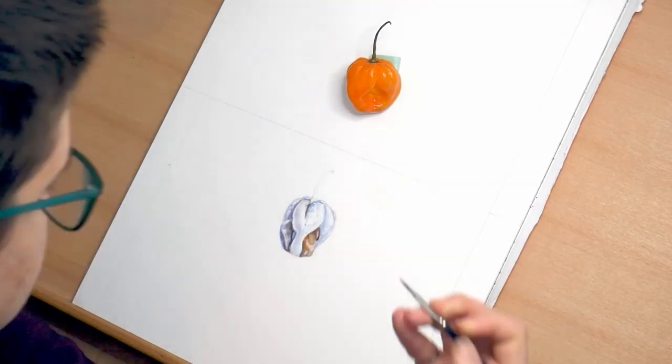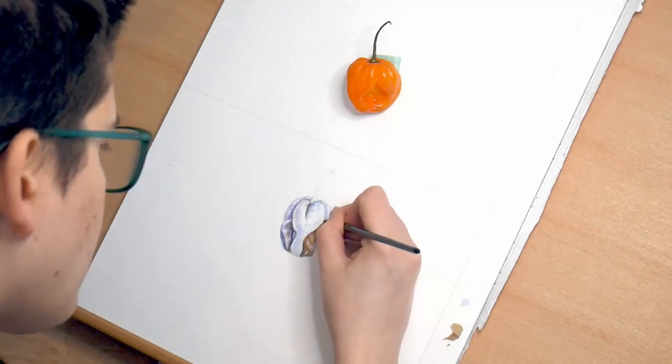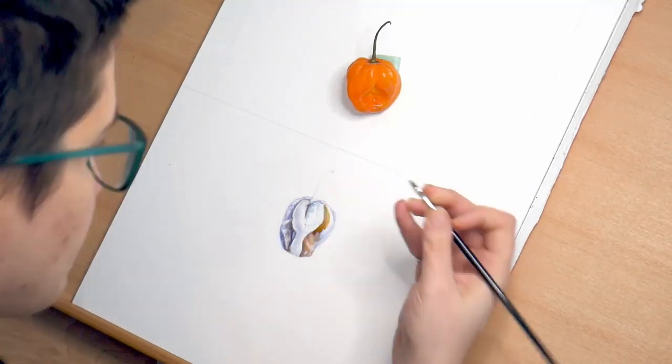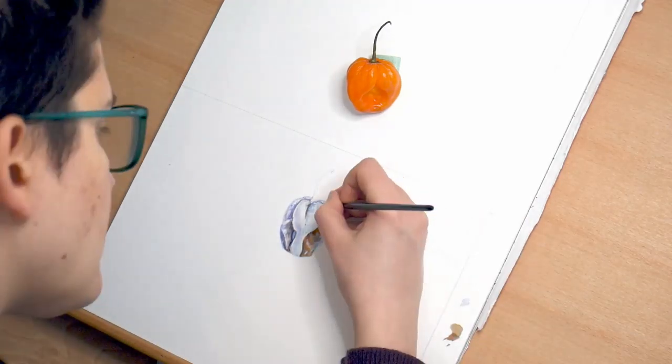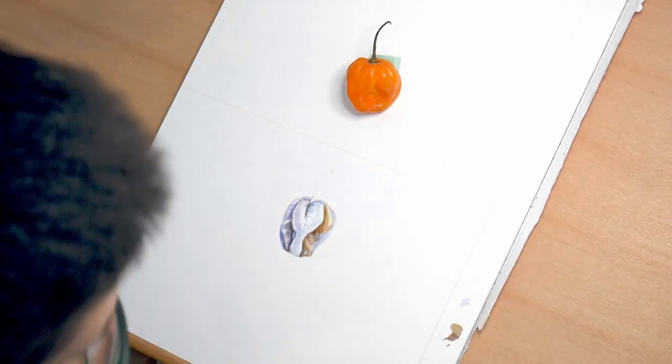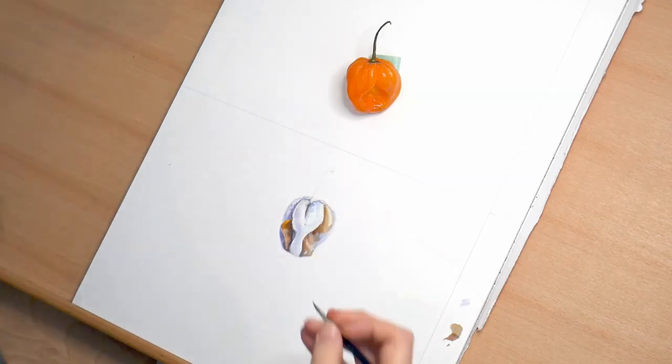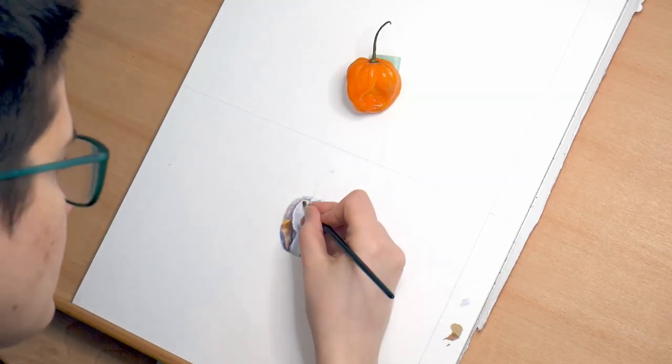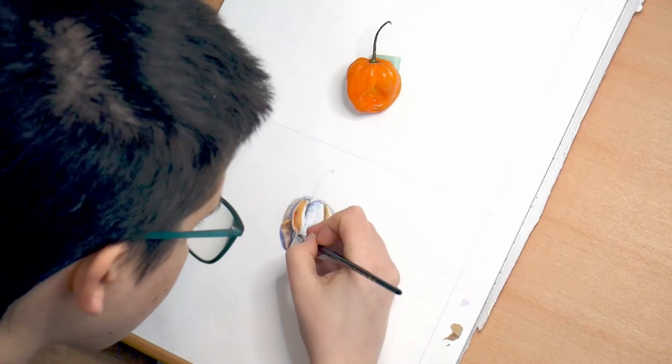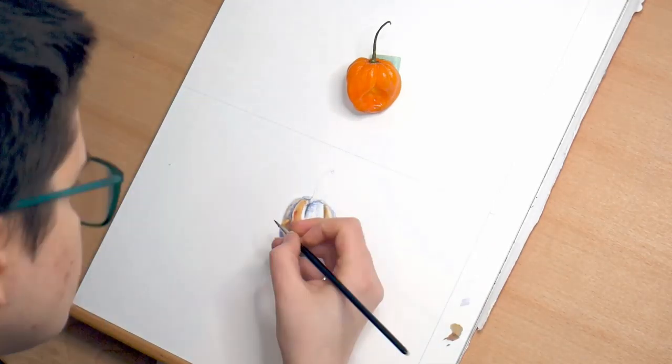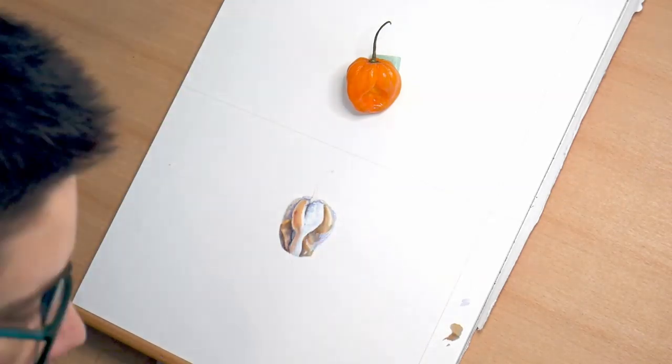So you can start seeing the oranges start appearing. And again, I'm filling it in gradually, but trying to remember to leave some areas pure white. Those are going to be the shiniest, brightest highlights. I'm working from the sides, again, leaving the brightest areas for last.